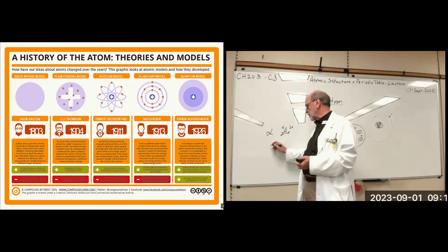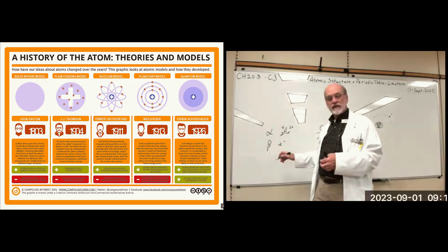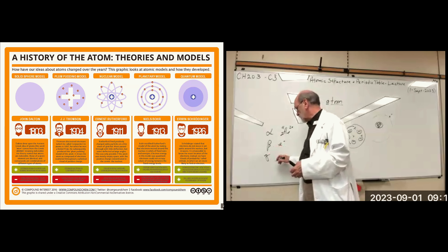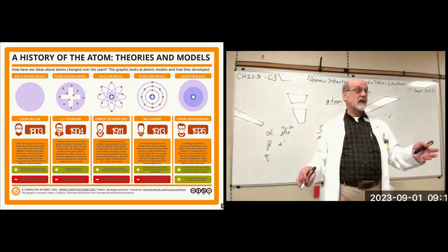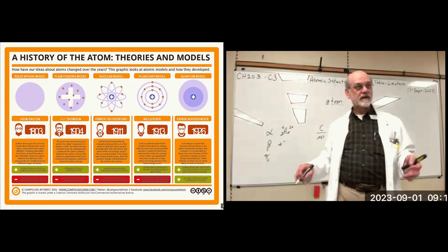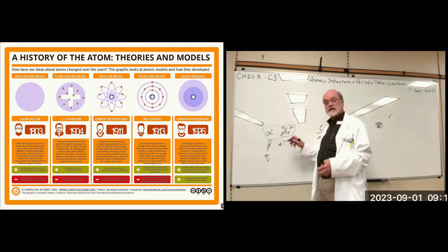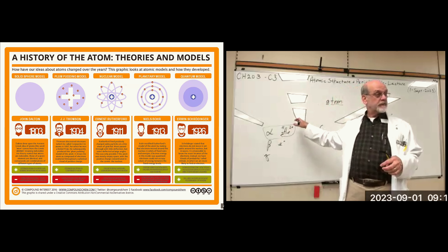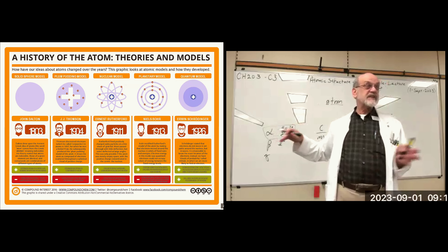Then there were beta particles, which are essentially electrons. And then there was gamma, which is high-energy light. This is what Rutherford was actually working on — alpha emissions — and his team had access to alpha emitters.